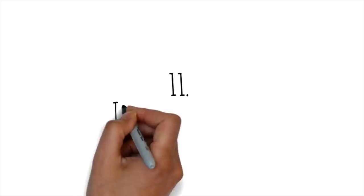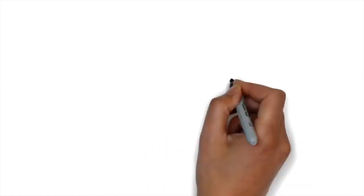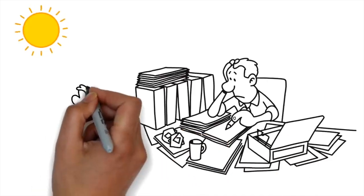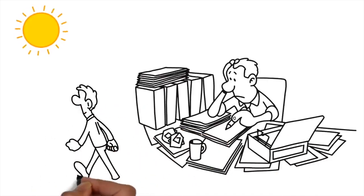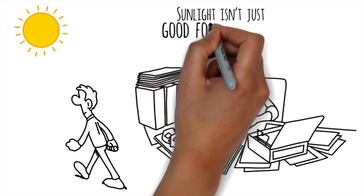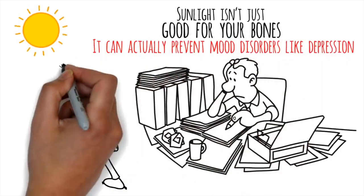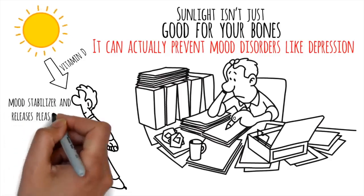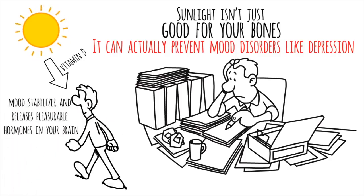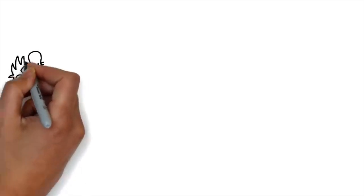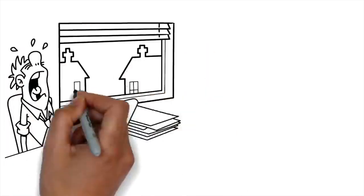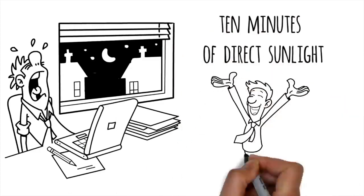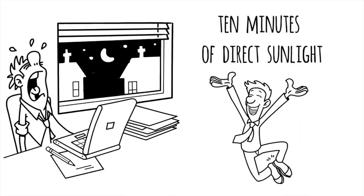Number 11. The Power of Sunlight. Have you ever noticed you feel down when you've been inside all day, but when you walk outside, your mood instantly changes? Sunlight isn't just good for your bones, it can actually prevent mood disorders like depression. The vitamin D you get from the sun acts as a mood stabilizer and releases pleasurable hormones in your brain. This is why people in countries with less sunlight are more likely to be depressed. All you need is 10 minutes of direct sunlight to literally and figuratively brighten up your world.